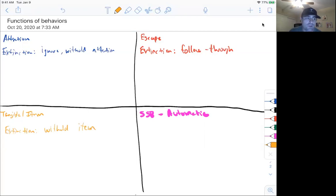So if they're aggressive or they're yelling or running away or destroying things to try to gain access to the iPad, then extinction would be withholding the iPad. You're withholding the item just like attention. When you're ignoring or withholding attention with the tangible function, you're going to withhold that item typically for extinction.